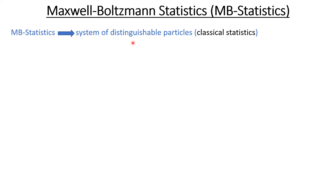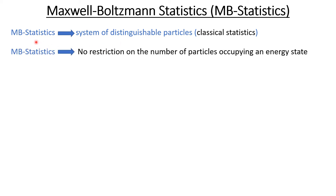This statistic is actually a limiting case of the Fermi-Dirac statistic and Bose-Einstein statistic, because when we apply the Bose-Einstein statistic or Fermi-Dirac statistic at high temperature or low density of particles, the result reduces to the Maxwell-Boltzmann statistic. Like the Bose-Einstein statistic, in Maxwell-Boltzmann statistic there is no restriction on the number of particles occupying an energy state.